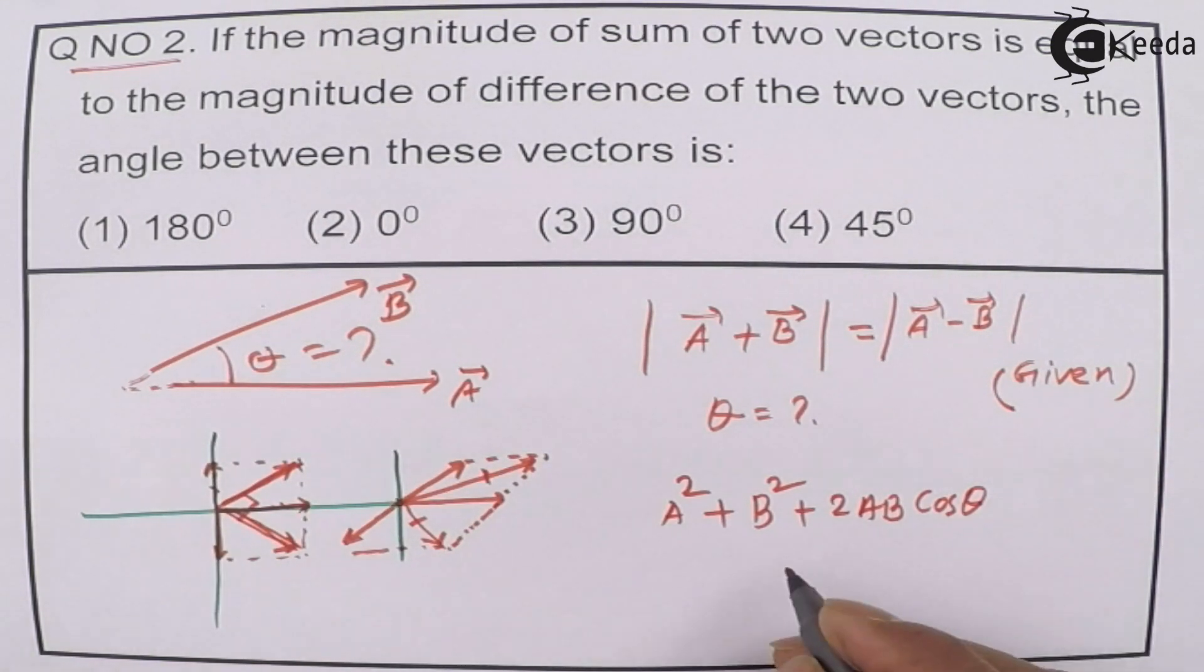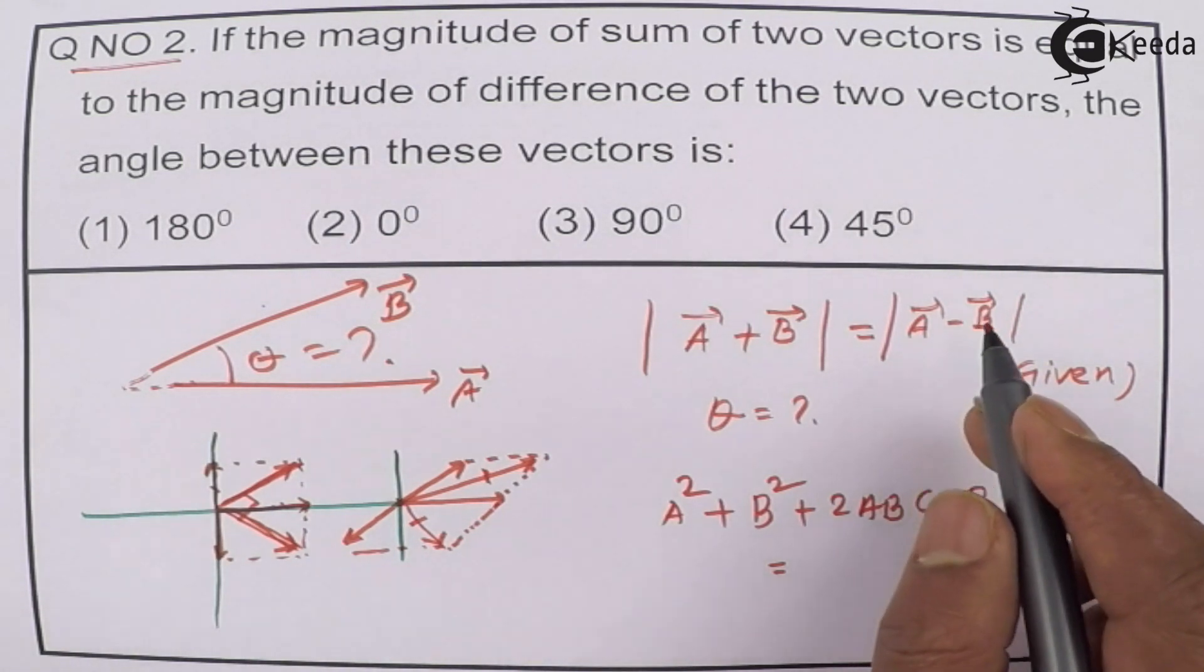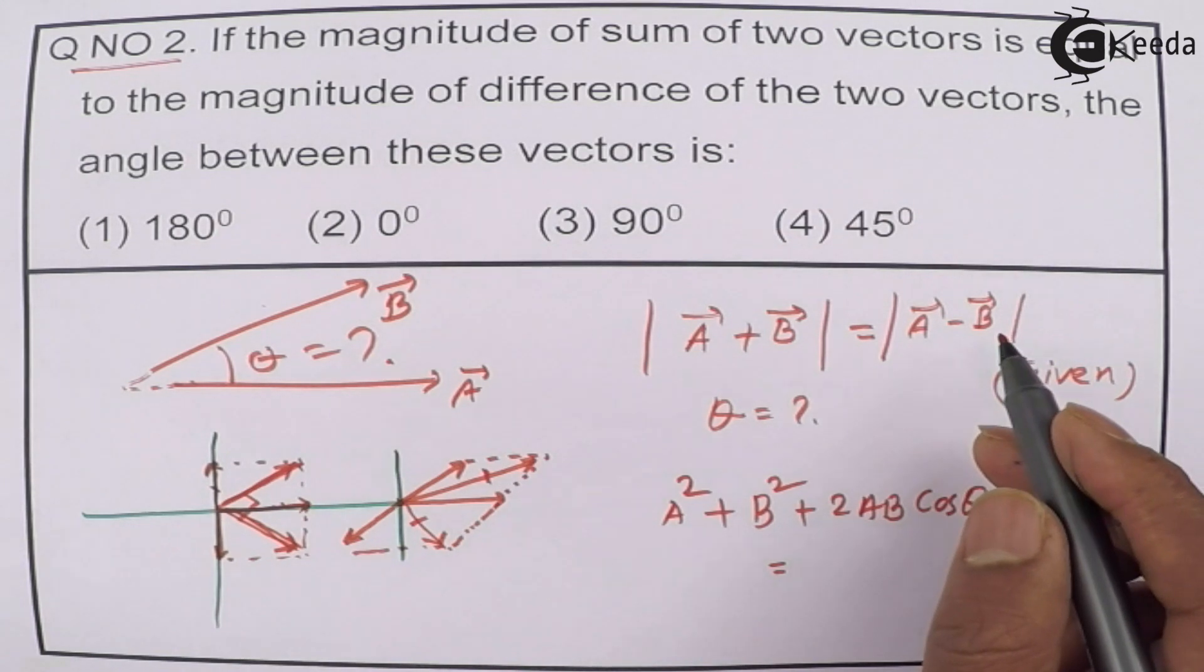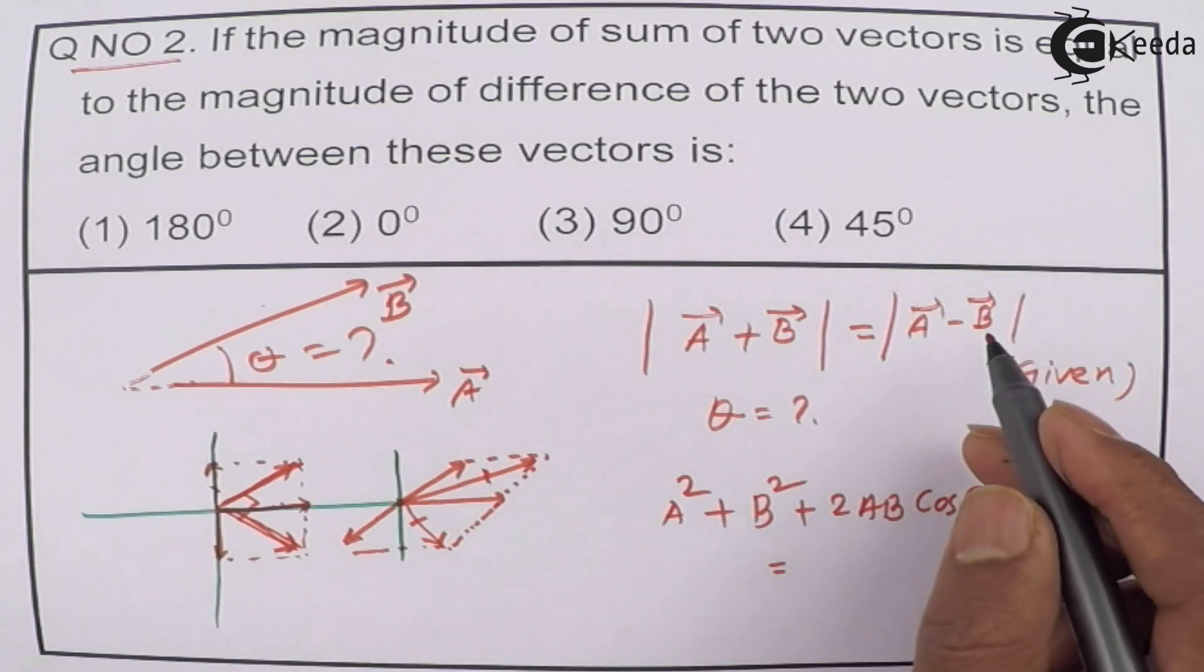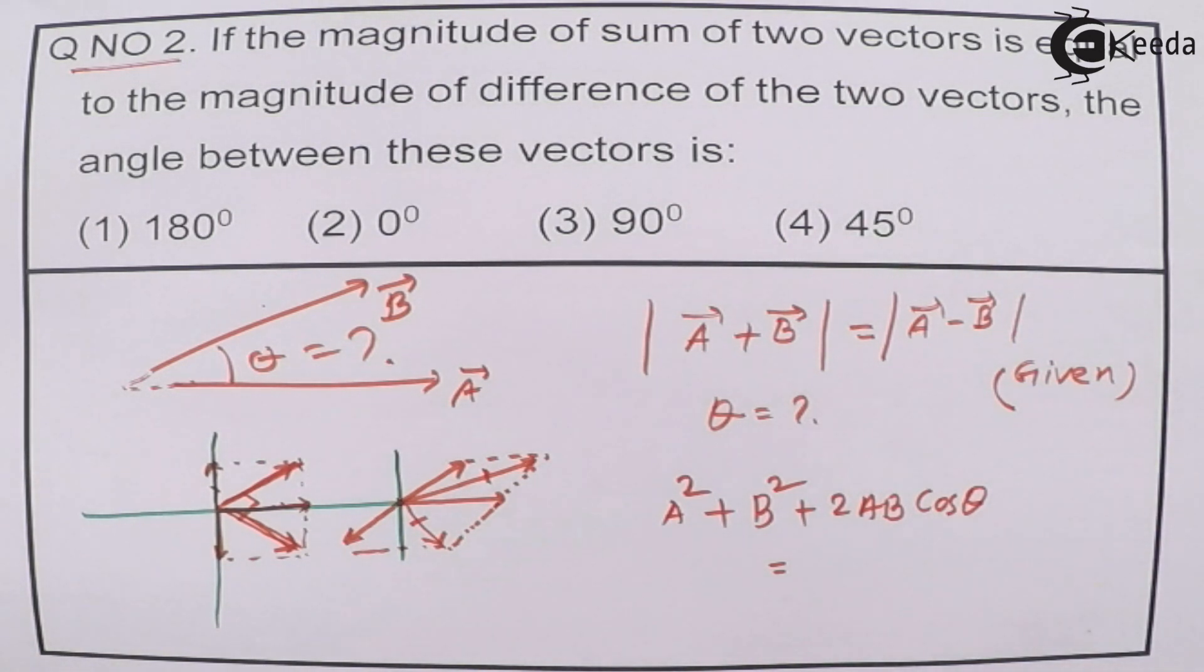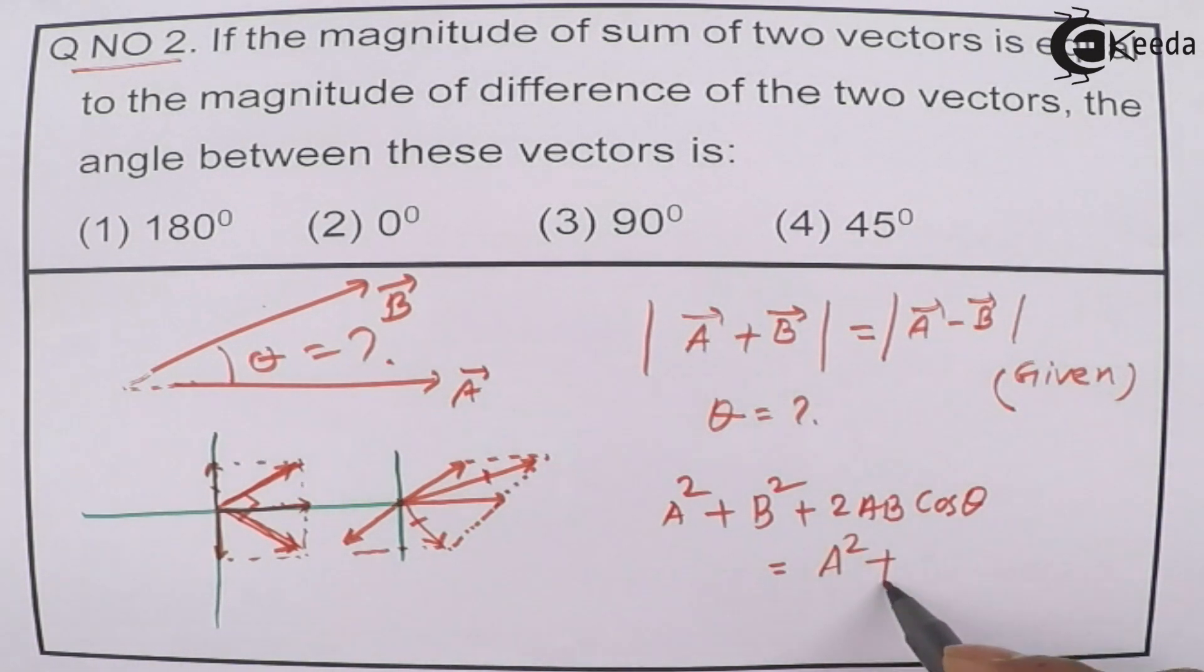Similarly, that must equal to the difference. When you take the difference, then it is A² plus B² minus 2AB cos θ. Because that is cos(180° - θ). When you talk about cos(180° - θ), cos is in the second quadrant and being negative, the minus 2AB factor will come. So therefore, this will become A² plus B² minus 2AB cos θ.